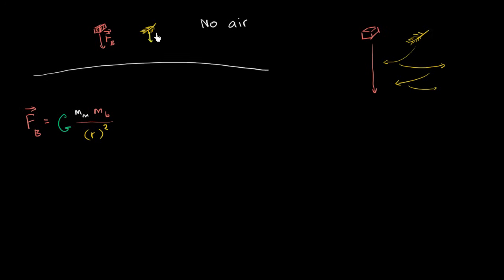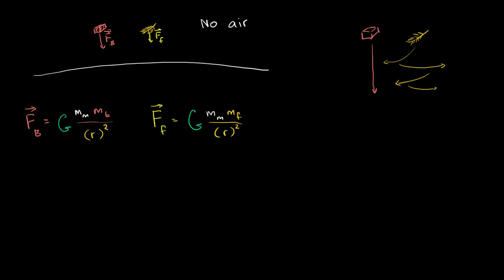The force due to gravity on the feather — or the weight of the feather on the moon — is going to be equal to big G times the mass of the moon, times the mass of the feather, divided by the distance between the feather and the center of the moon squared. If you look at both expressions, they both share the quantity G times the mass of the moon divided by the distance squared.